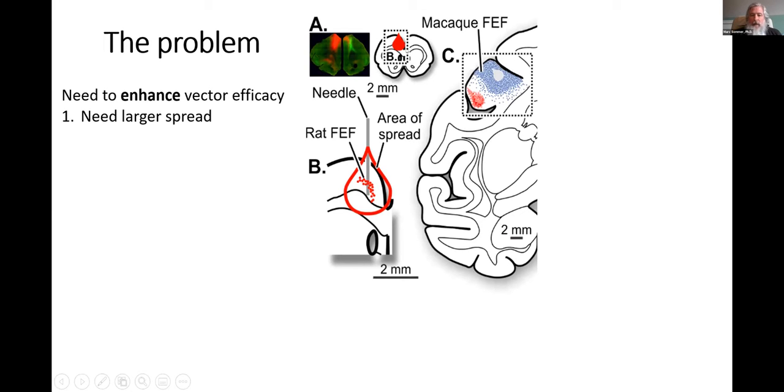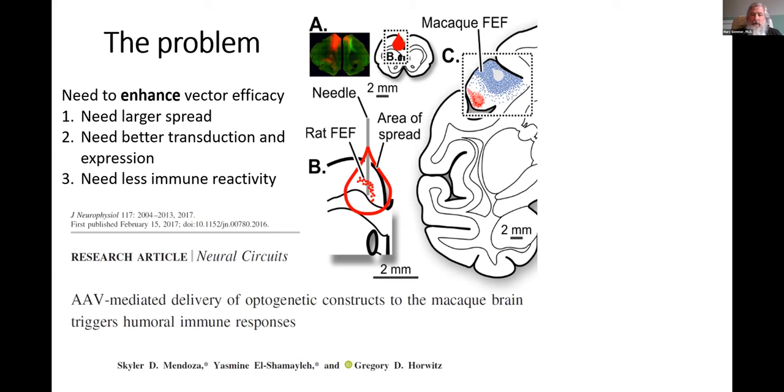Doing this in the monkey brain, to scale with this rat brain, you would only cover a little bit of the monkey frontal eye field. To cover a proportional size or volume of the monkey frontal eye field, you'd need many more injections or much better efficacy and transduction and spread. It's counterproductive to make a lot of injections because then you get immune responses and the immune system starts to try to kill off the vectors in the expressed opsins.